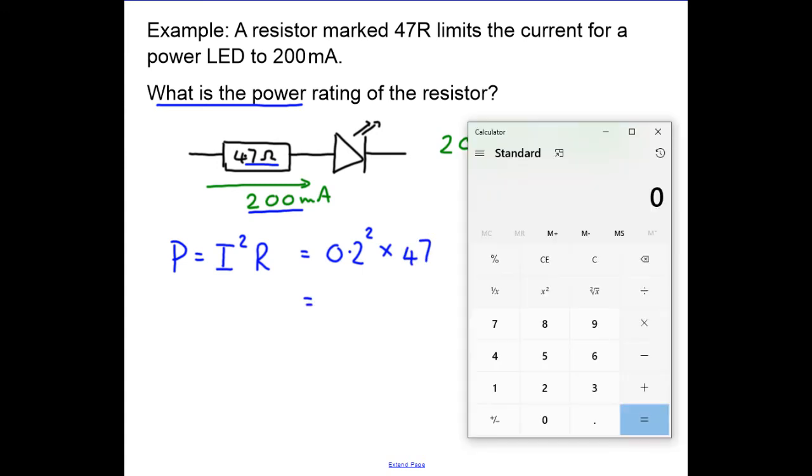0.2 times 0.2 times 47 equals 1.88 watts. So the power rating of the resistor would be about 2 watts, and you can get 2-watt resistors. Let's look at another example.